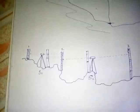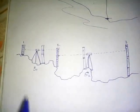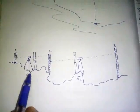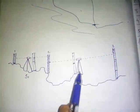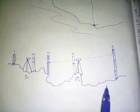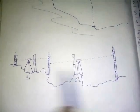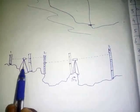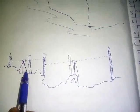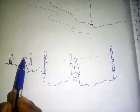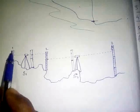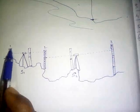First, a dumpy level is used. For example, this is a surface with undulation. This is a tripod, and this is a dumpy level. This is a leveling staff. The height is marked by scale.